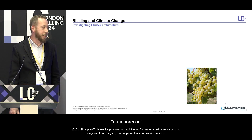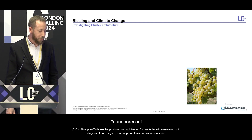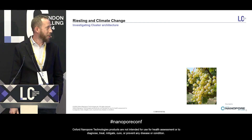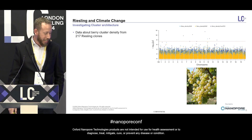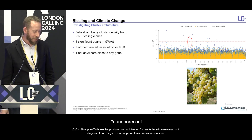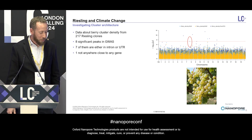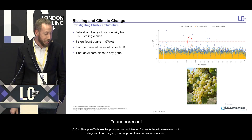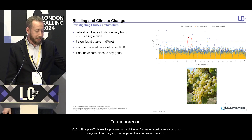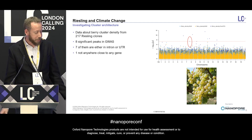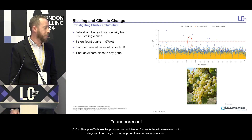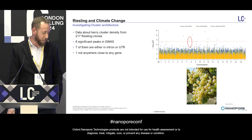For about 217 different Riesling clones, we got phenotype data about cluster density — really about the density of berries in the cluster. We correlated that with short-read genomic data and found some interesting SNPs. There were eight significant peaks in the GWAS. Seven of them are in introns or UTRs of known genes. But one on chromosome 8 was not near any genes, so I was wondering what was happening there.